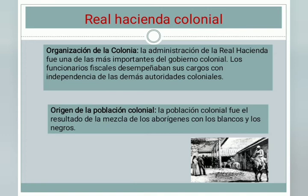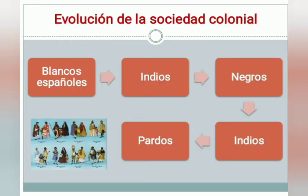La población colonial fue resultado de la mezcla de los aborígenes con los blancos y los negros. Como producto de esta unión surge el mestizo, cuyo número de importancia ha venido en aumento hasta nuestros días. La formación de los mestizajes constituyó un rasgo típico de la colonia española, a diferencia de la colonización inglesa. La evolución de la sociedad colonial se dio de diferentes rasgos.